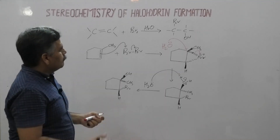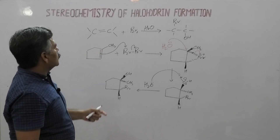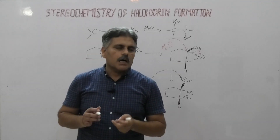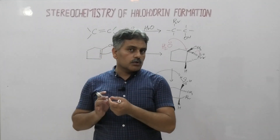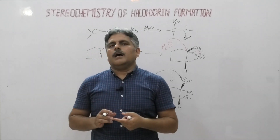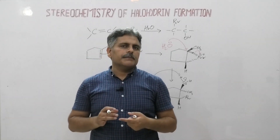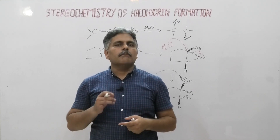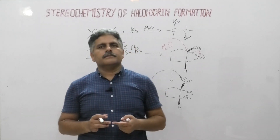You can try more examples by taking different groups. This is all about the stereochemistry of halohydrin formation. In my upcoming lecture, I will discuss some more reactions of alkenes. Thank you very much.